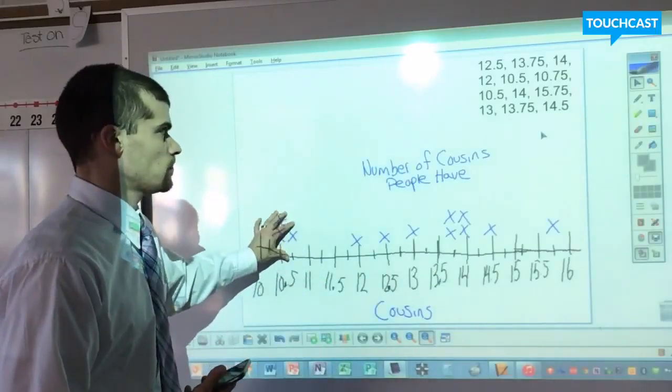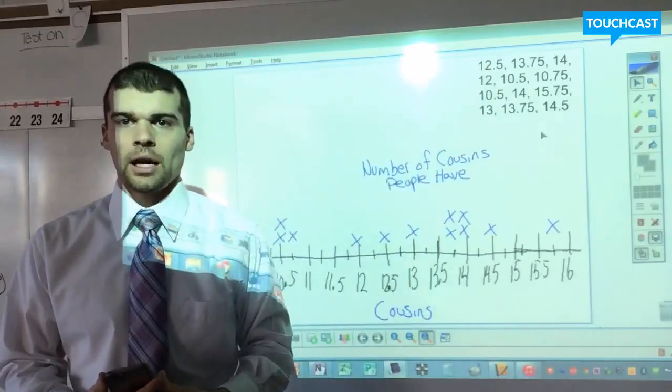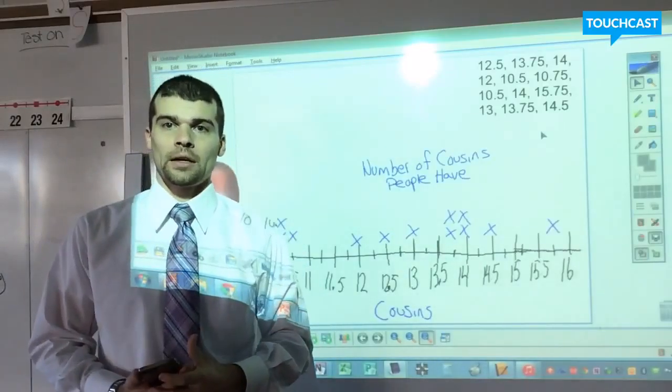It's the X's that are representing each of the numbers placed onto the line plot, and so those X's are our data point and our information for us to analyze.